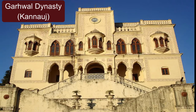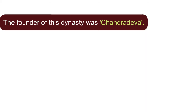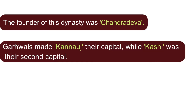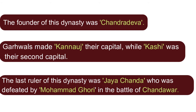Garhwal Dynasty of Kannauj: The founder of this dynasty was Chandradev. The Garhwals made Kannauj their capital, while Kashi was their second capital. Kannauj was the most important city and the center of activities for the Rajputras. The last ruler of the Garhwal dynasty was Jachan, who was defeated by Muhammad Gori in the battle of Chandavar.